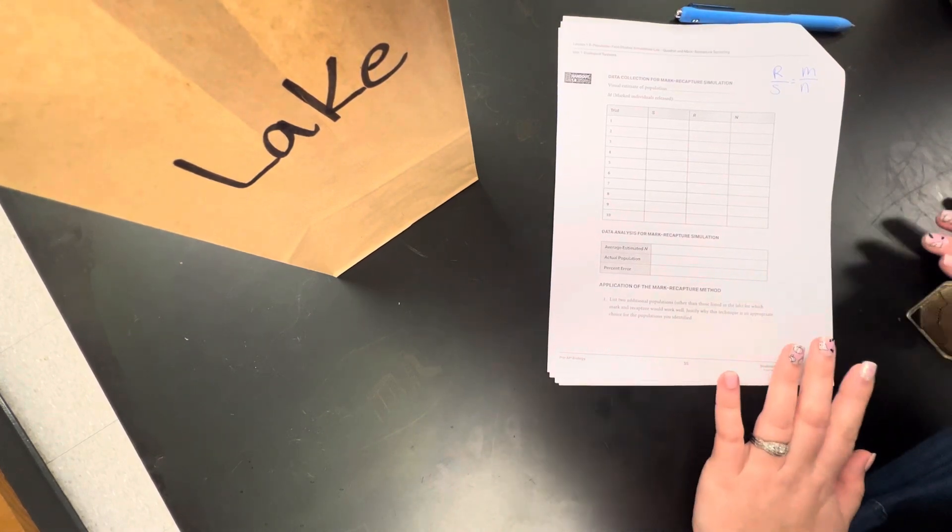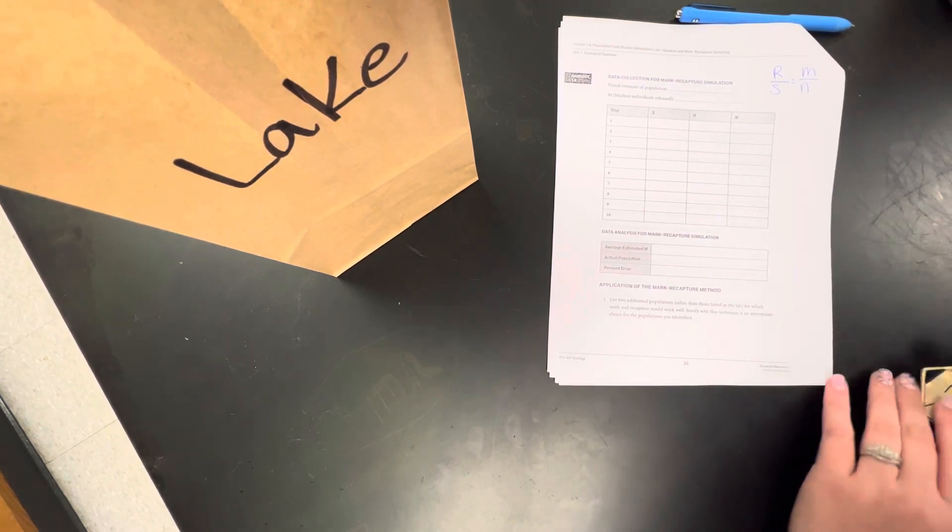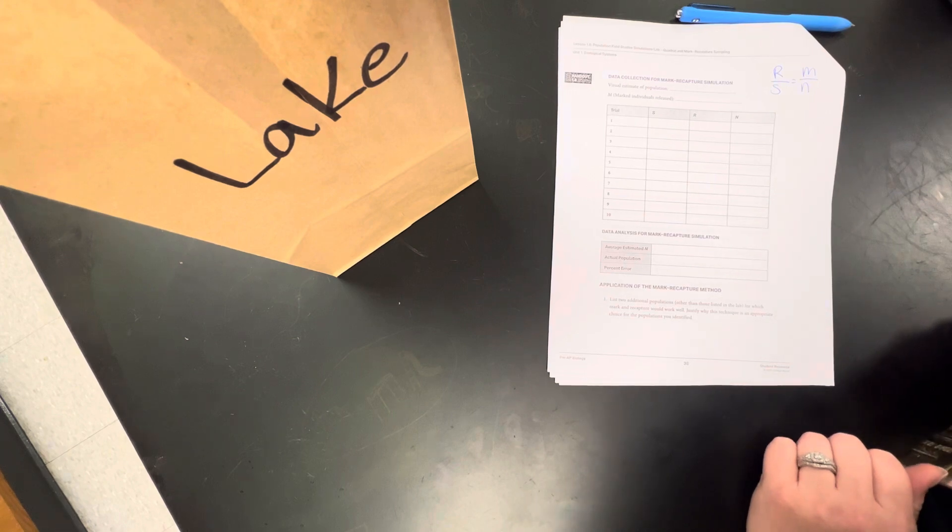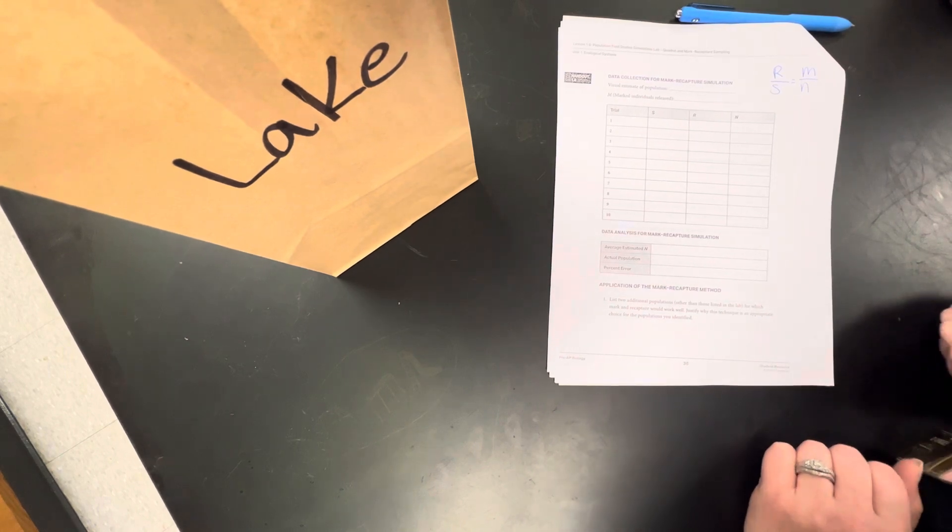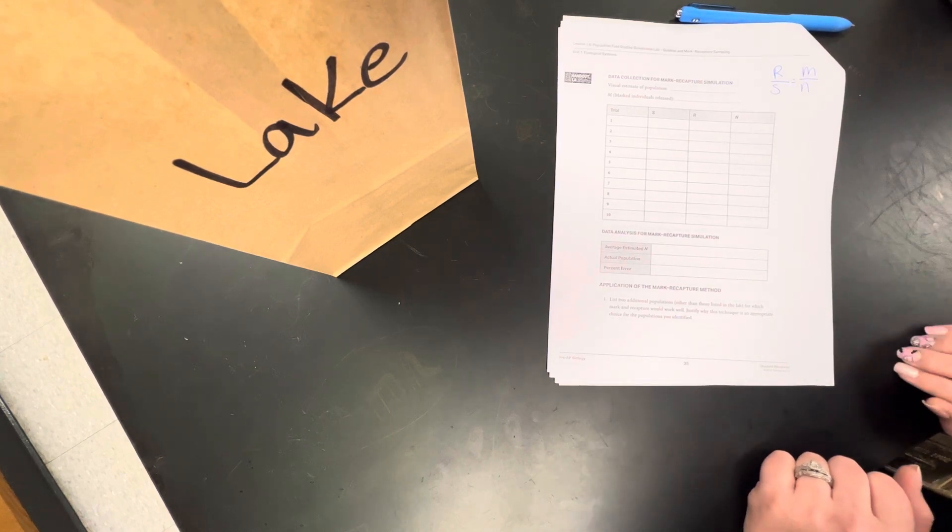So with the mark and recapture, remember that is where a scientist will go out into an area and capture a certain amount of organisms. They will mark them with some sort of paint or a tag, release them into the wild, and then they will catch a new sampling and calculate the total population by comparing the percentage of their second sample that has already been marked. And then they can do some math.